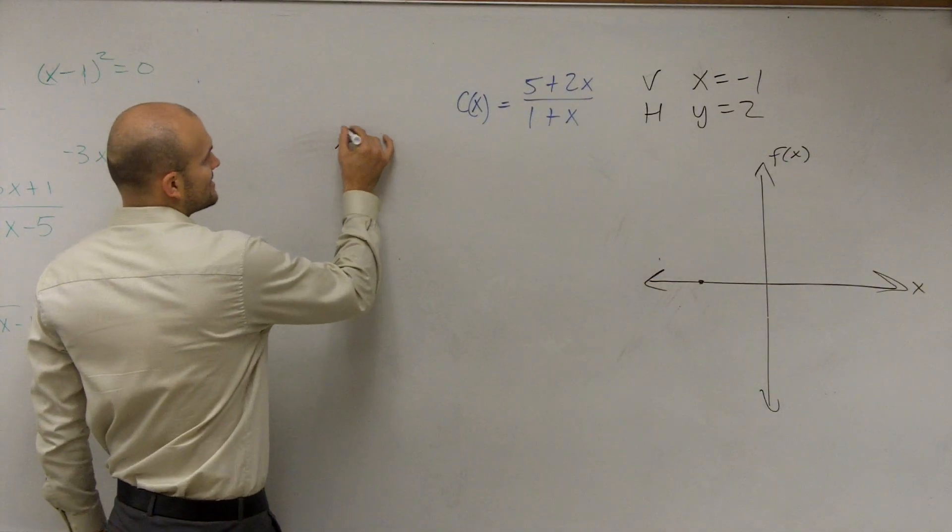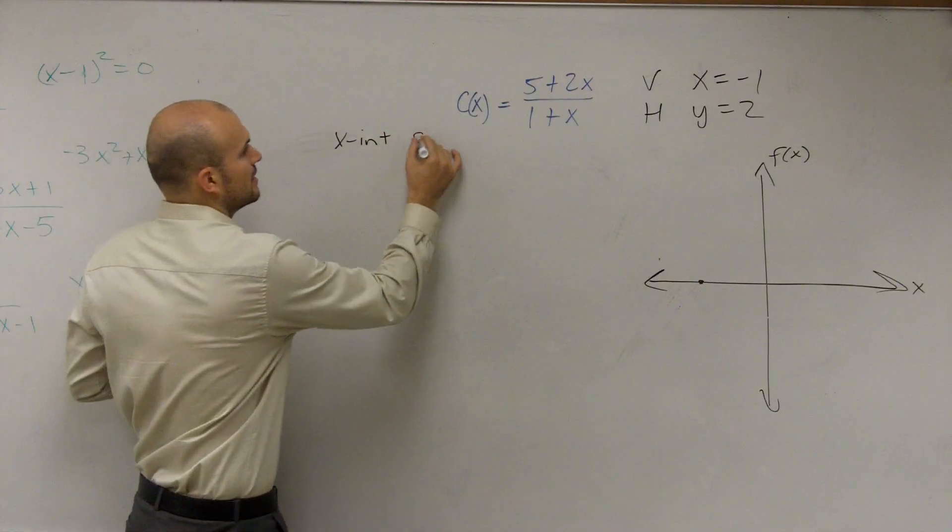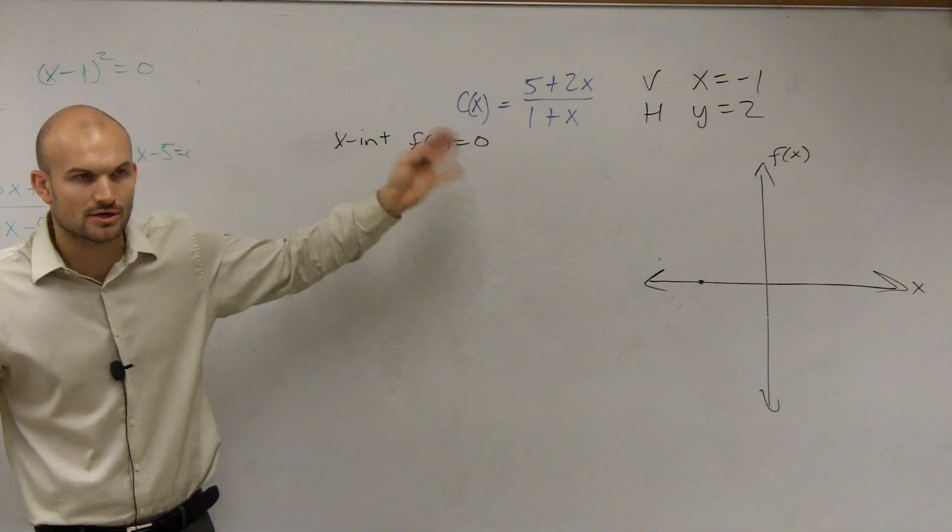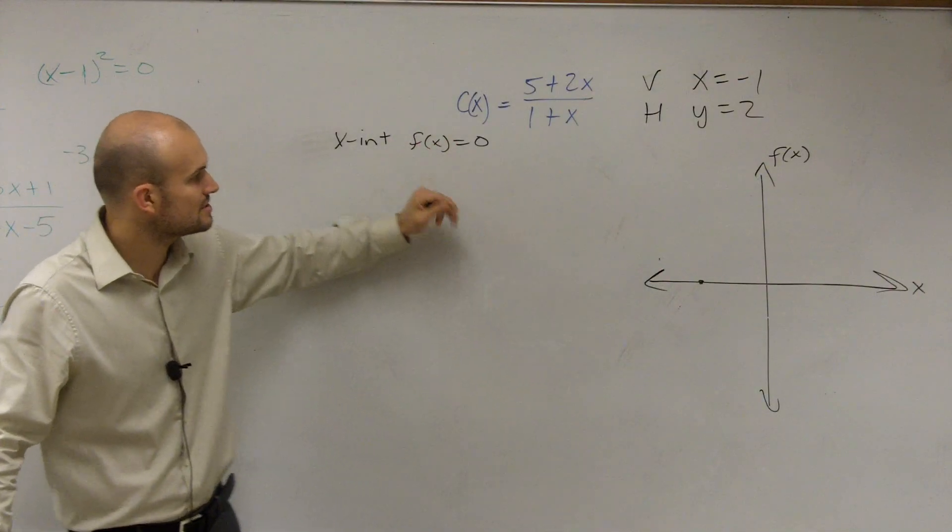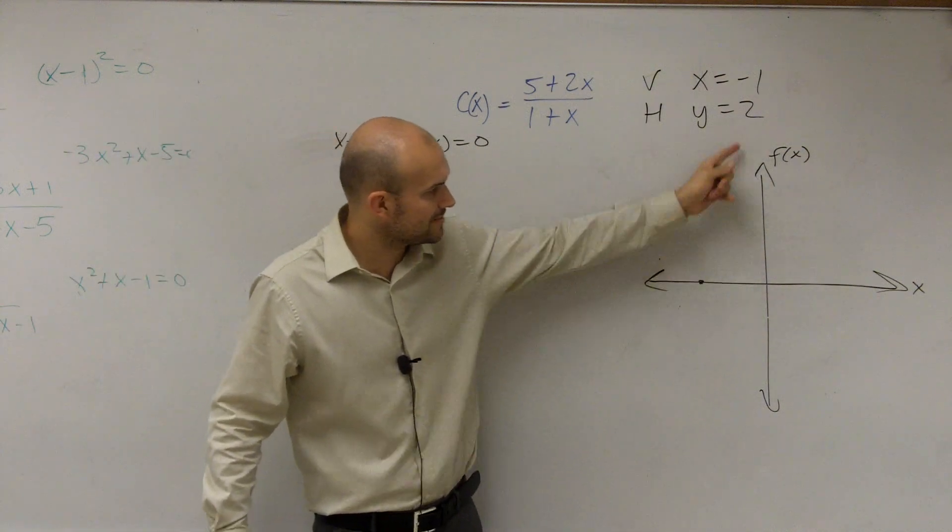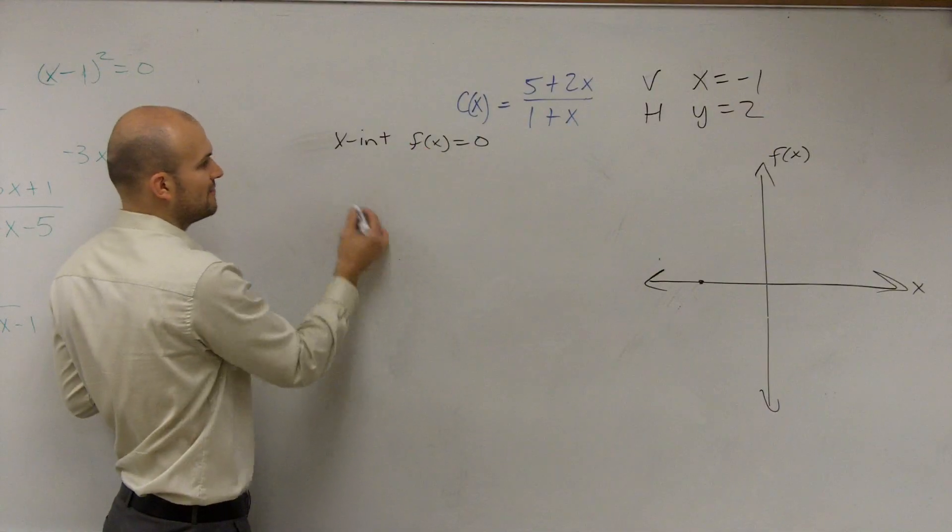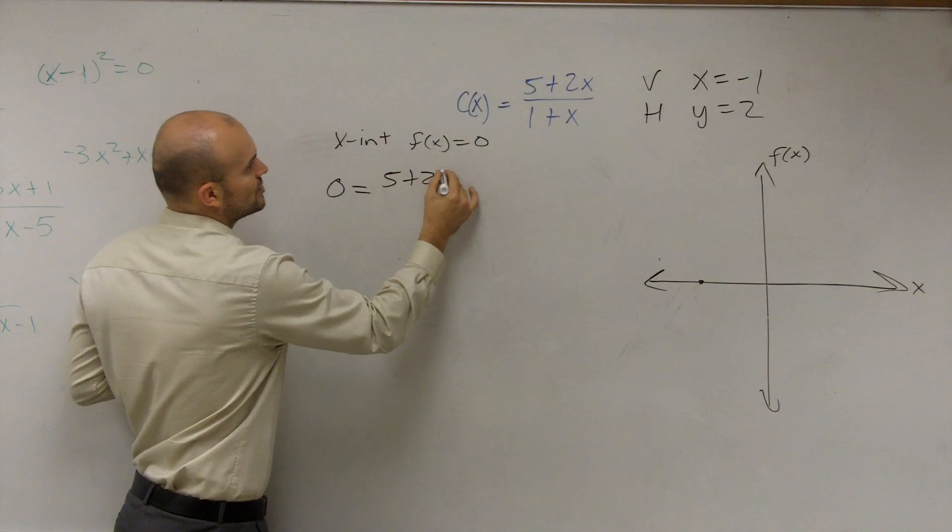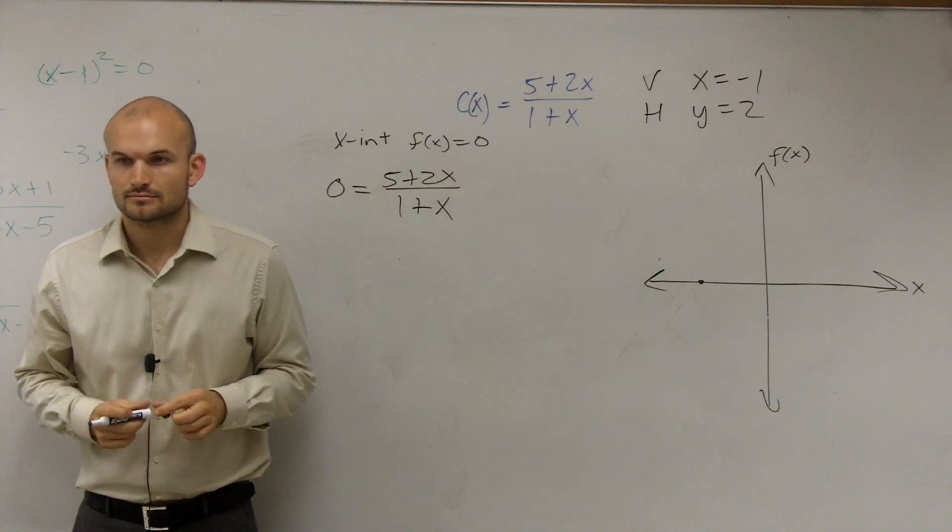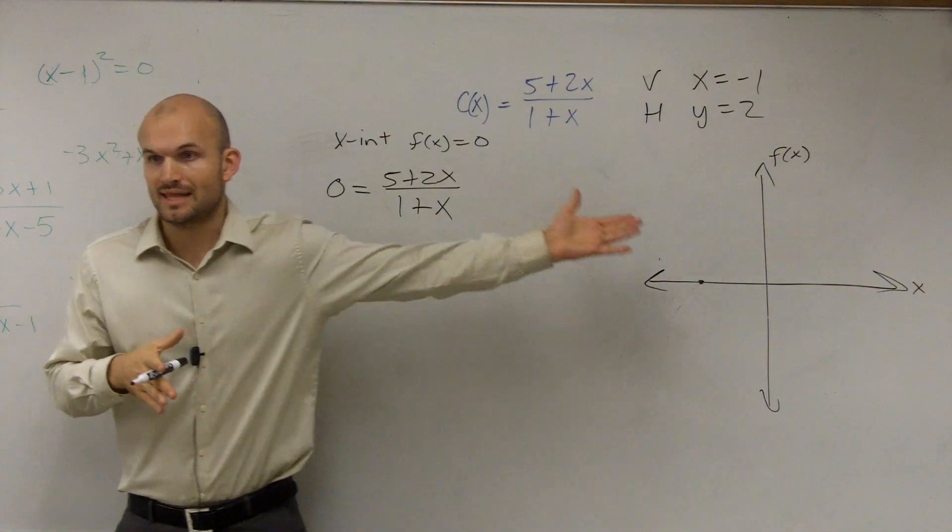So when I say x-intercept, when I want to find the x-intercept of a function, either my f of x equals zero, or sometimes we might say y equals zero if we're just dealing with linear lines and not functions. But x-intercept, your output at x-intercept, your output is equal to zero. So what do you put in for zero? You put zero in for f of x. Zero equals five plus two x divided by one plus x.